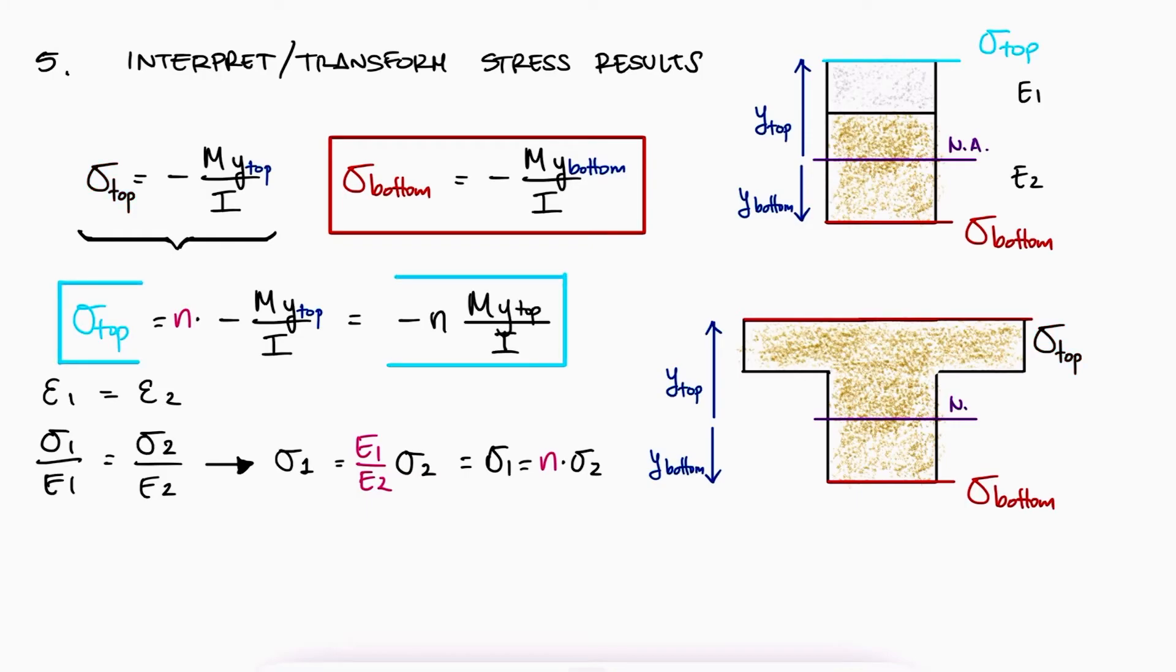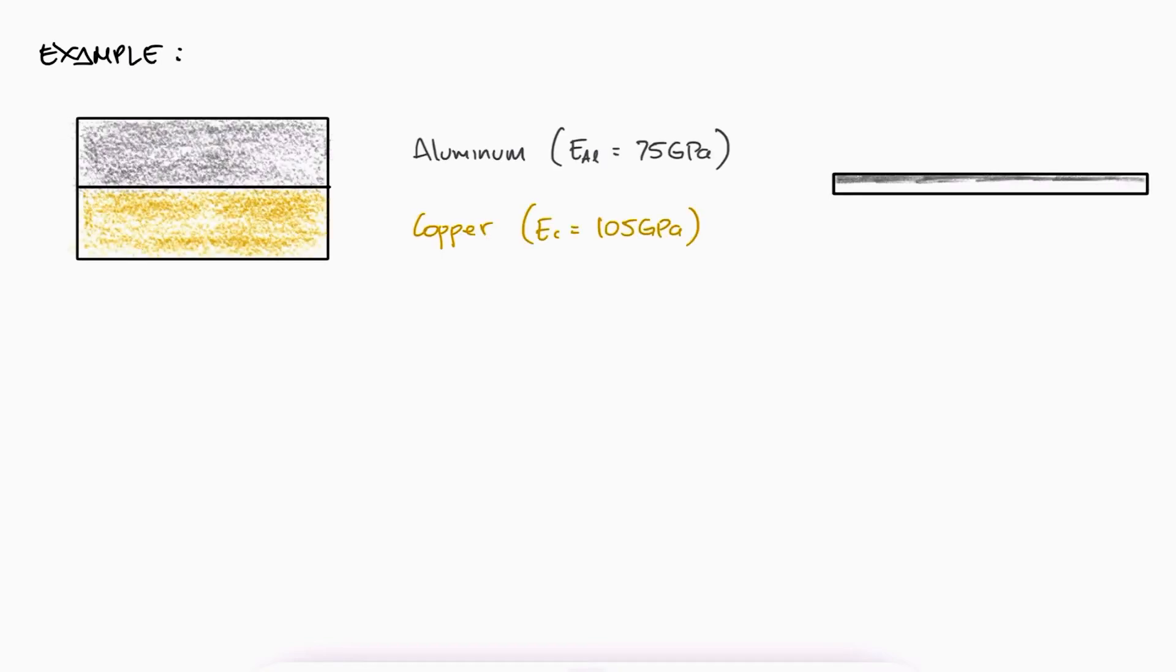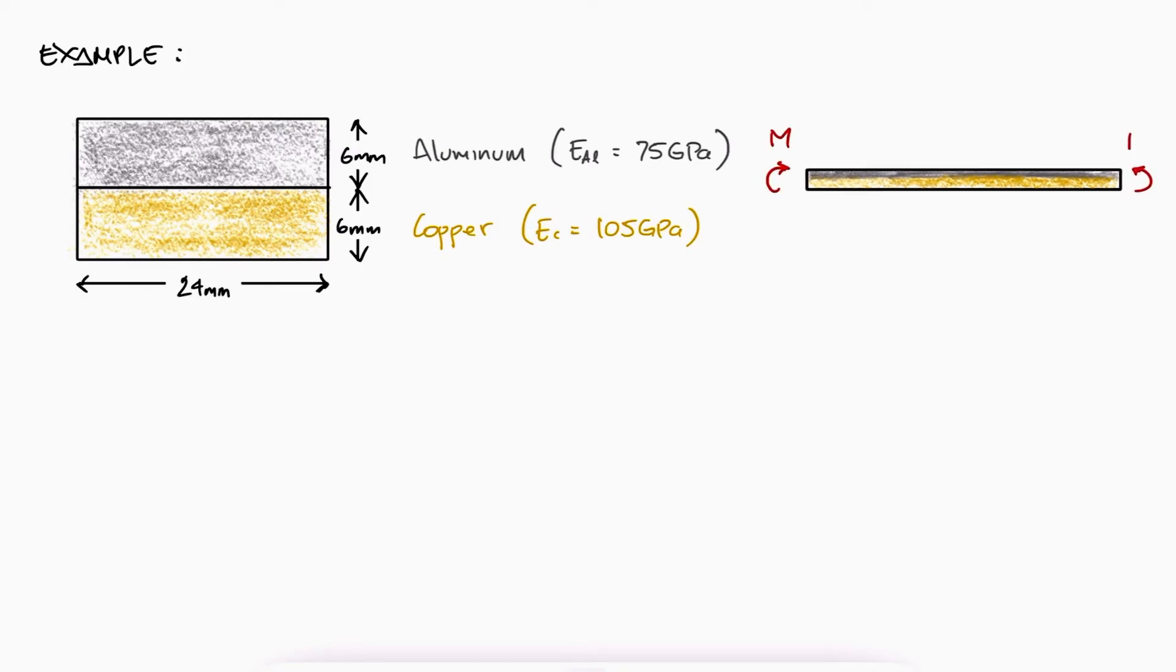Let's put what we've learned today into practice with a simple, short example, and if you'd like to watch more complex problems being solved, make sure to watch the additional example videos linked in this video's description. A copper strip and an aluminum strip are bonded together to form the composite beam shown. Knowing that the beam is subjected to a 35 Nm couple, what is the maximum stress in the aluminum and the copper? Remember to try this on your own before watching this solution.